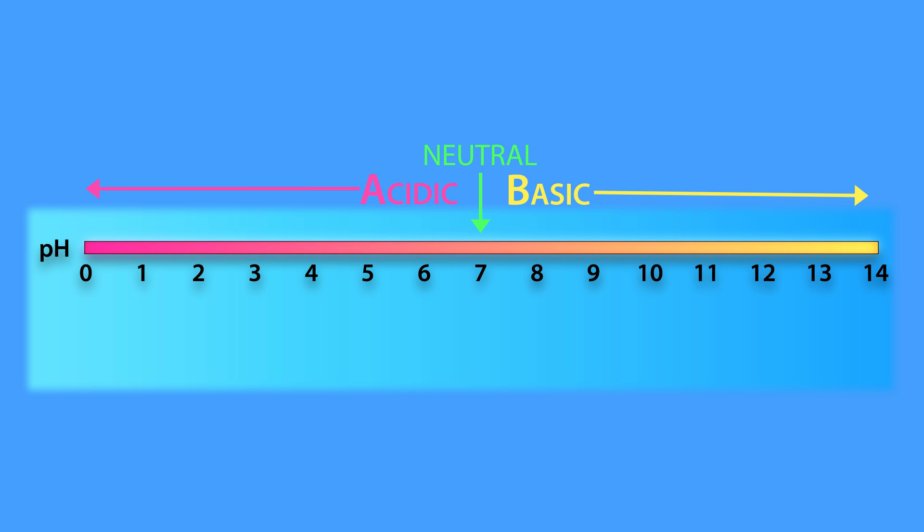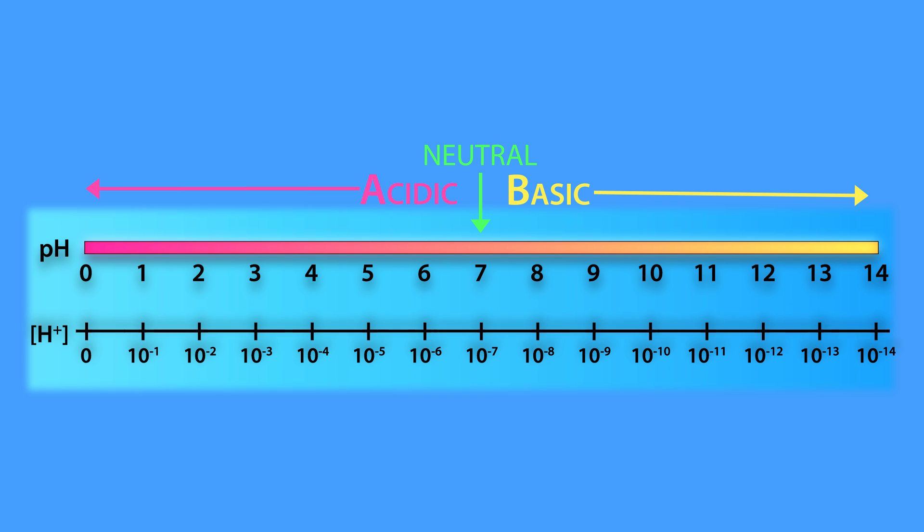More importantly, pH is a measure of hydrogen ion concentration. For example, a pH of 1 equals a hydrogen ion concentration of 10 to the minus 1 molar, while a pH of 2 equals a hydrogen ion concentration of 10 to the minus 2 molar.